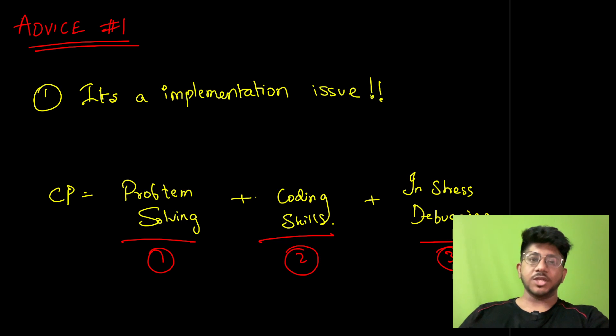Competitive programming is mostly three things combined. Number one, problem solving. Number two, coding skills. Obviously you have to write the code for the problem. And the third thing is in-stress debugging. There are these three key things that get involved. Now, if you miss any one of them, you will not see the rating growth that you are looking for.